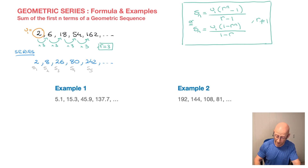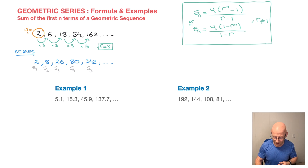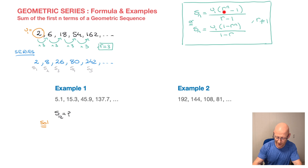Now let's work through two examples. In each example we're given the first few terms of a geometric sequence. For example one, we're asked to calculate the sum of the first 12 terms of the sequence — which we could also say is finding the 12th term of its geometric series. So we need to find S sub 12. Looking at the sequence and the formula, we need to note the first term u sub 1 as well as the common ratio.